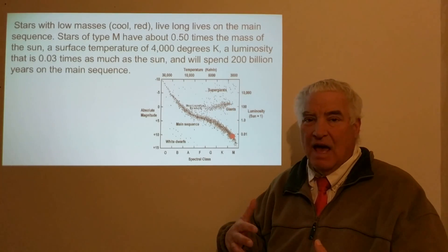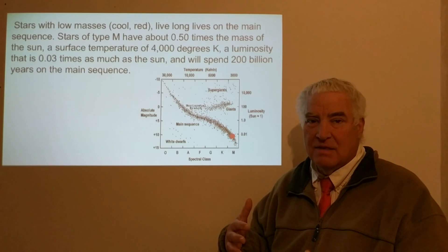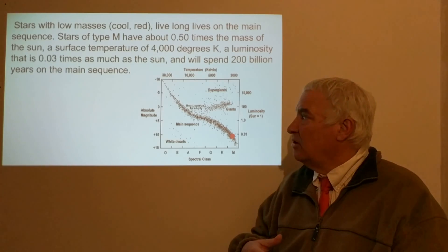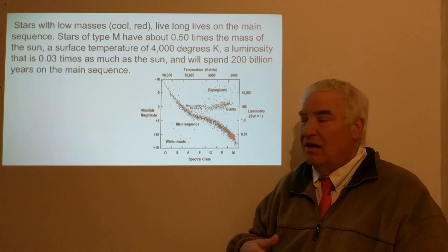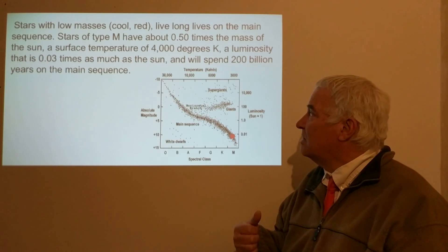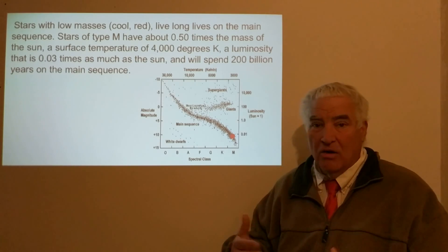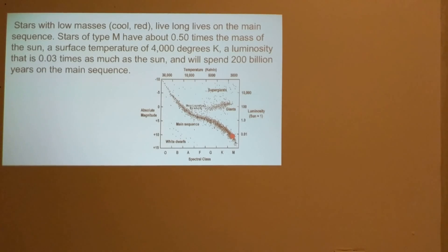So because of its low luminosity, it's conserving its fuel. It has a little bit less fuel than the Sun, being that it's half of the solar mass. But since it's using its energy only three percent the rate of the Sun, it will spend longer than the Sun—in fact, 200 billion years on the main sequence.